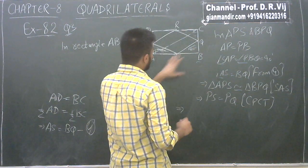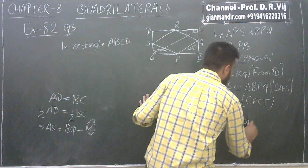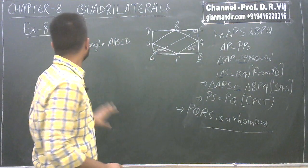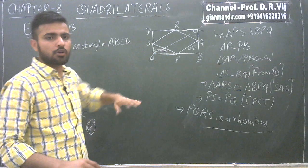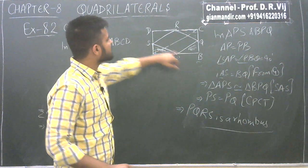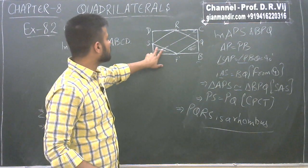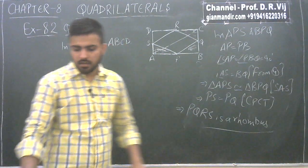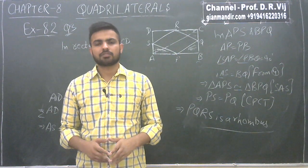PS equals PQ implies that when adjacent sides of a parallelogram are equal, it becomes a rhombus. So PQRS is a rhombus. This was question 3 of exercise 8.2. In this lecture we covered up to here; the remaining questions will be discussed in the next lecture. Thank you very much.